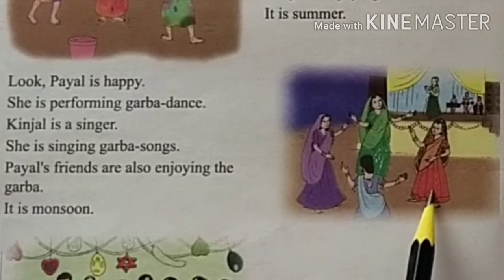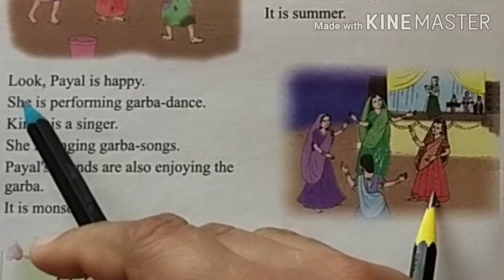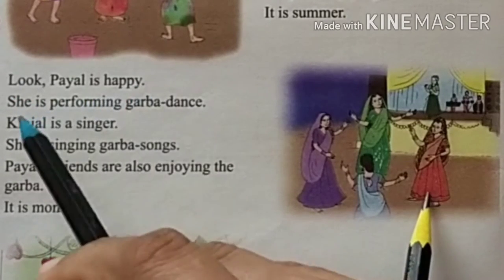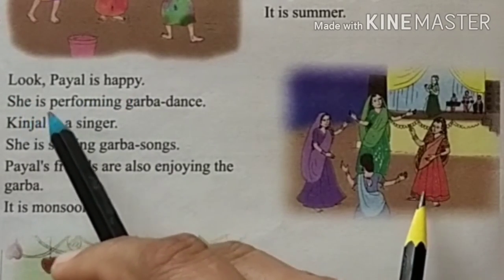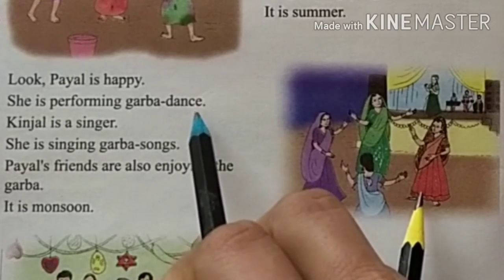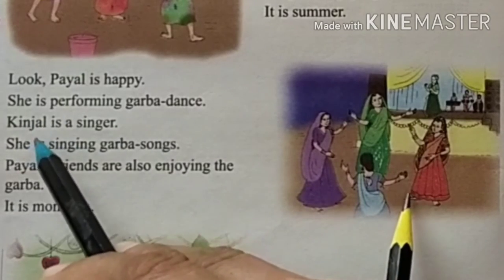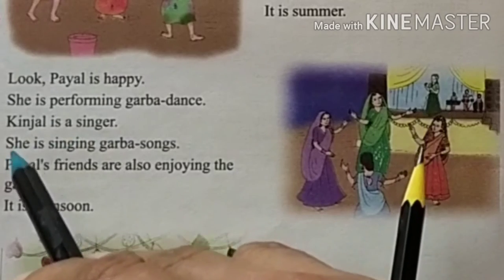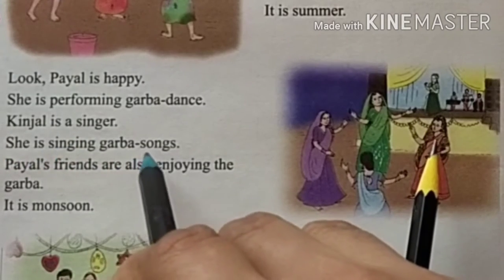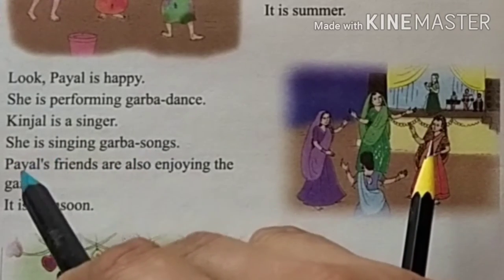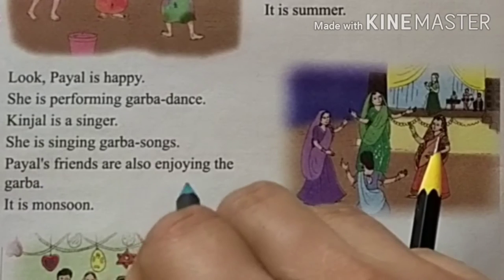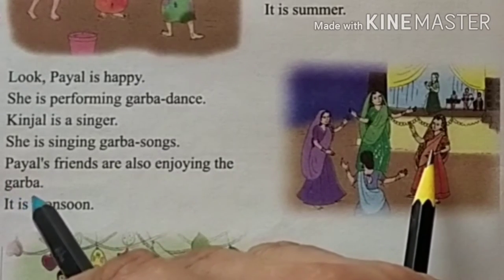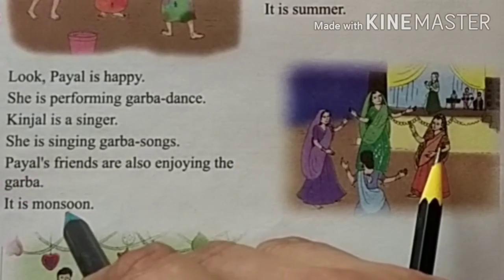Third picture. Look. Pile is happy. She is performing garba dance. Kinjal is a singer. She is singing garba songs. Pile's friends are also enjoying the garba. It is monsoon.